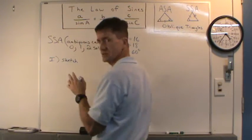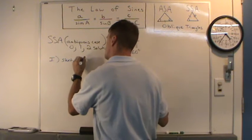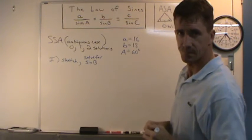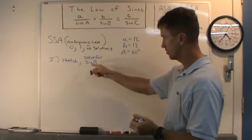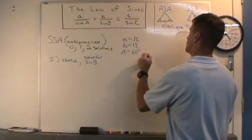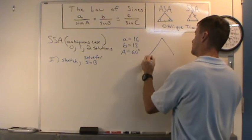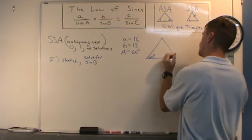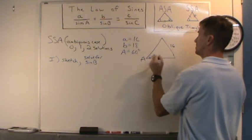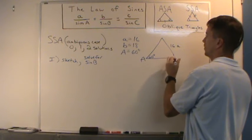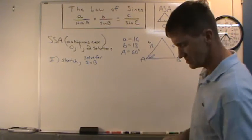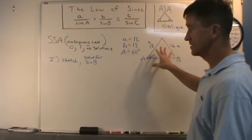Step one: make a sketch and solve for sine of B. The sketch doesn't have to be drawn to scale. I'll put angle A at 60 degrees, with little a equal to 16 opposite it, and angle B with little b equal to 18 on the other side. Then we set up the law of sines: a over sine A equals b over sine B, so 16 over sine(60°) equals 18 over sine(B).